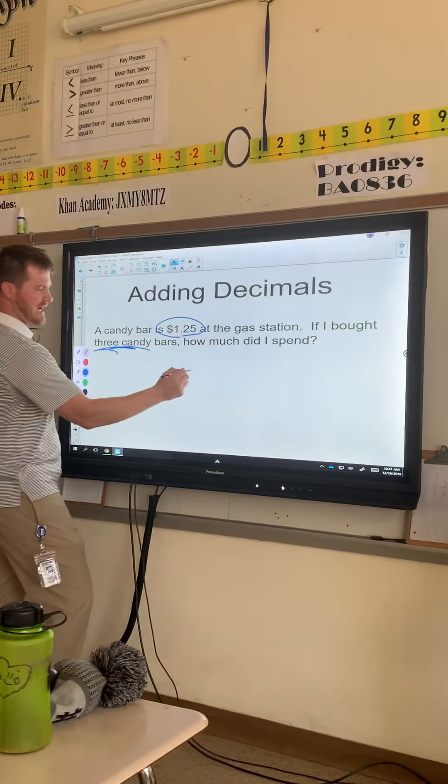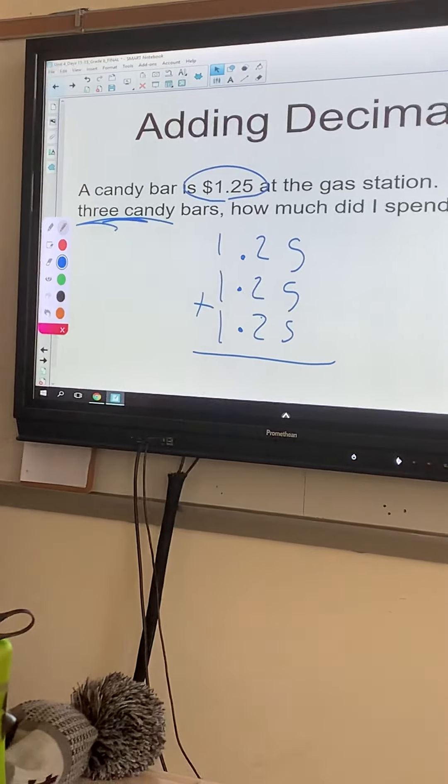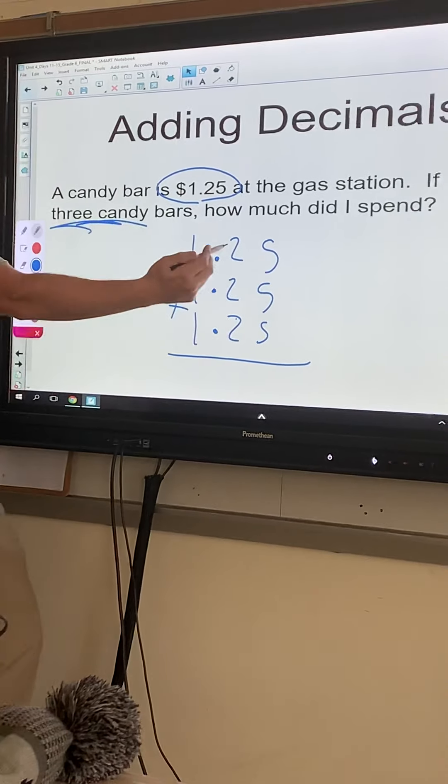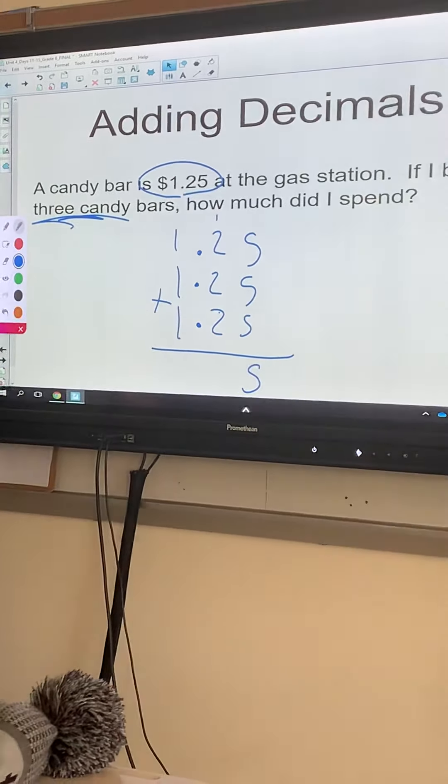We're getting three candy bars each at $1.25. We're adding up three things. Decimal, decimal, decimal. Now the numbers fall into place: $1.25, $1.25, and $1.25. Now we're going to add them up.